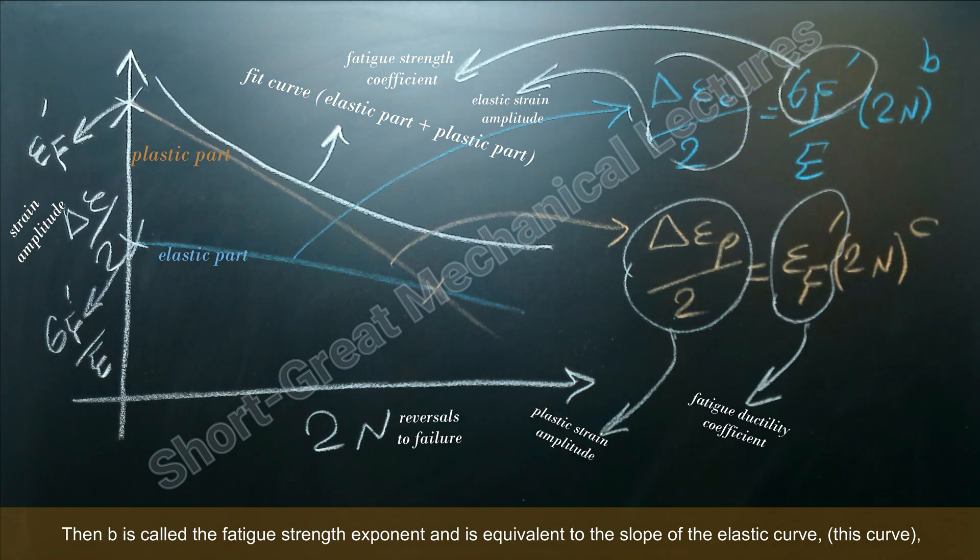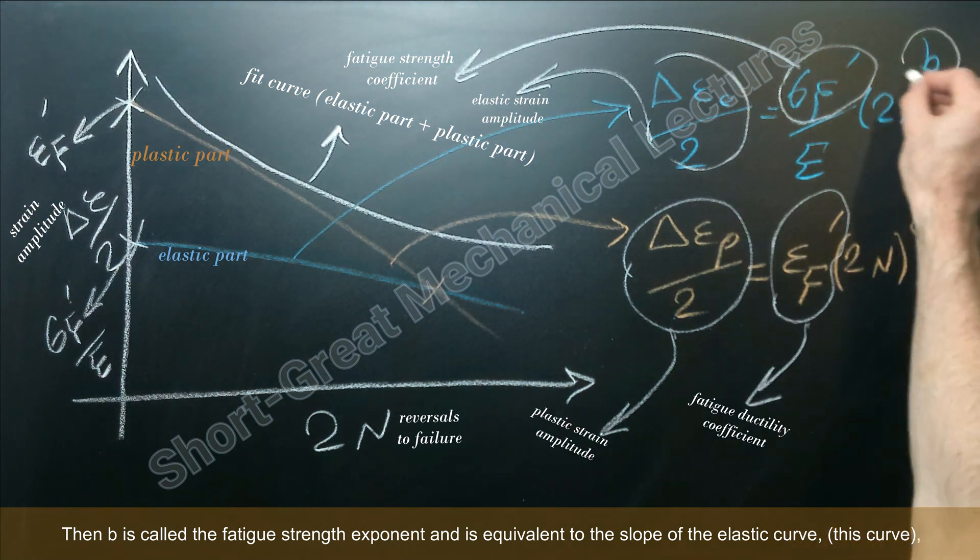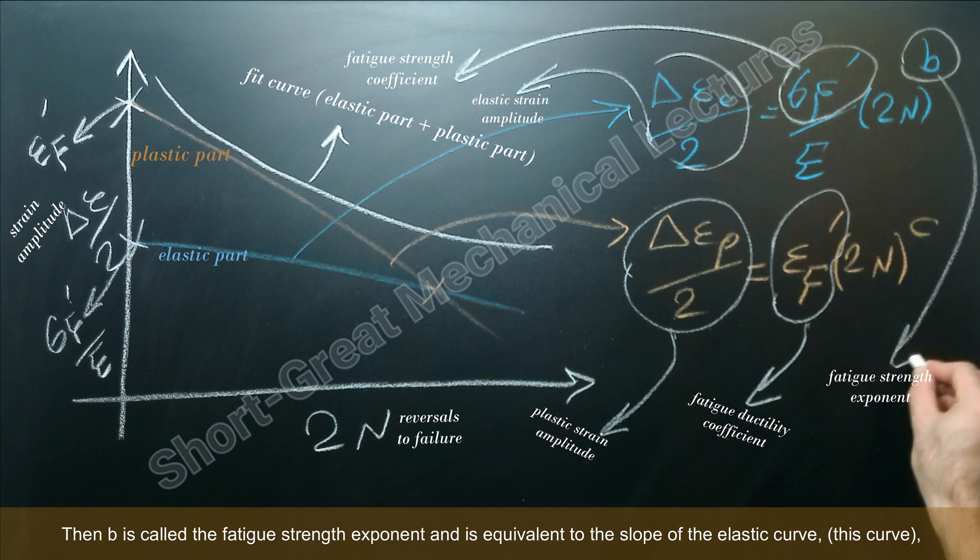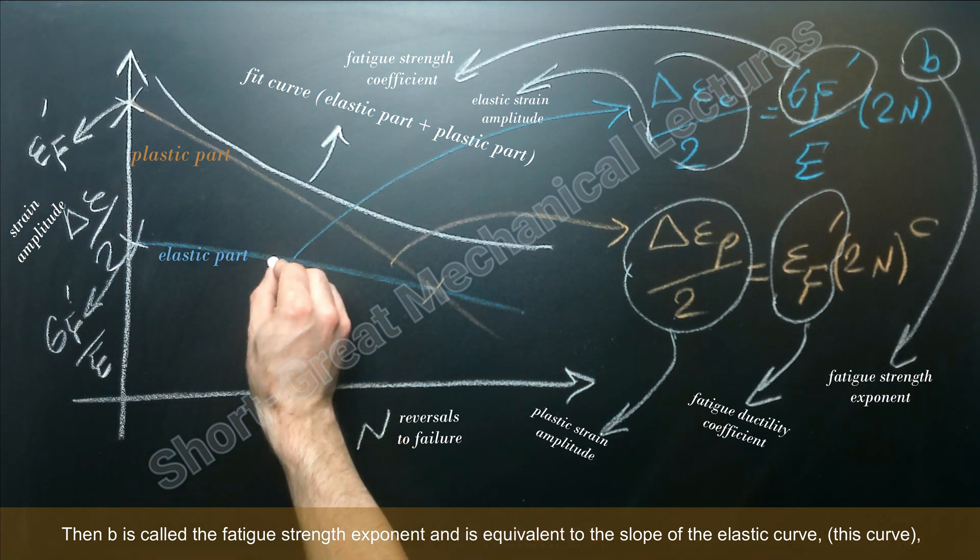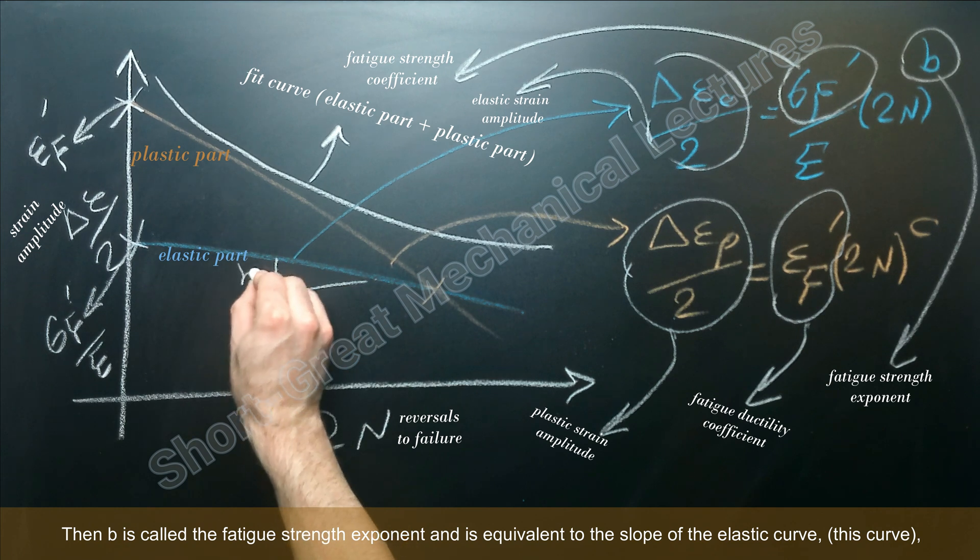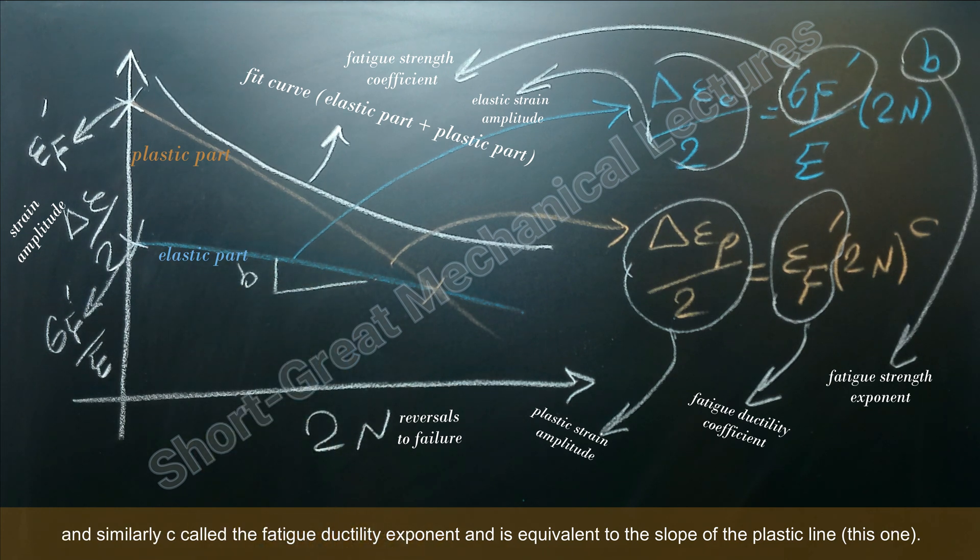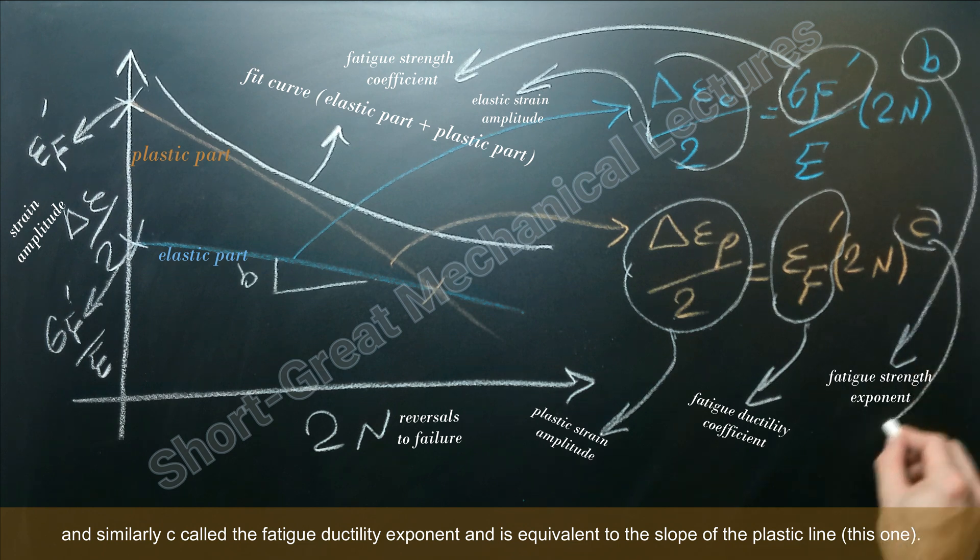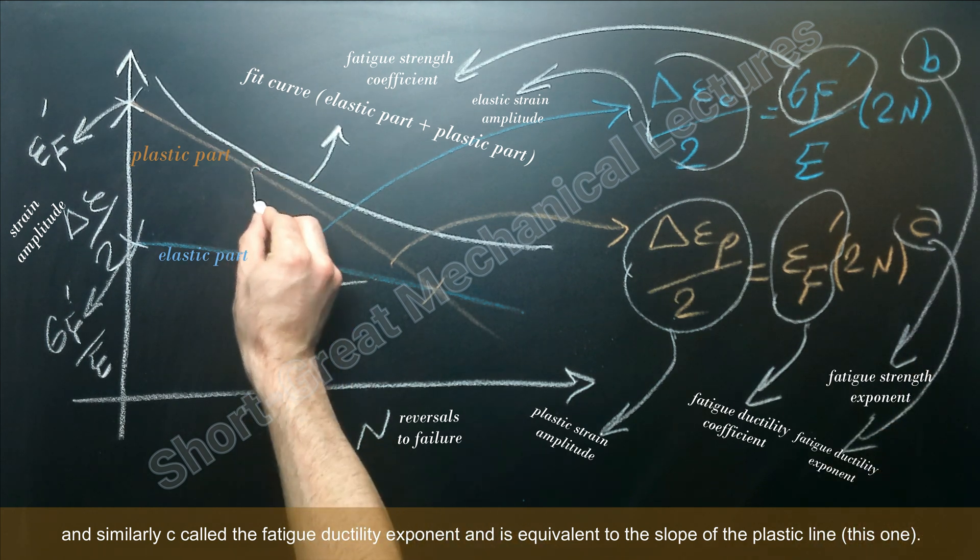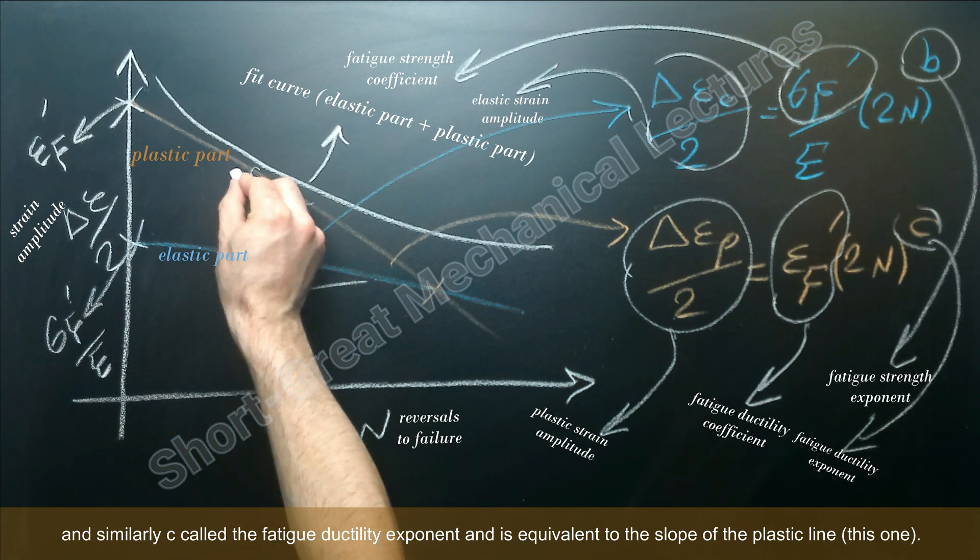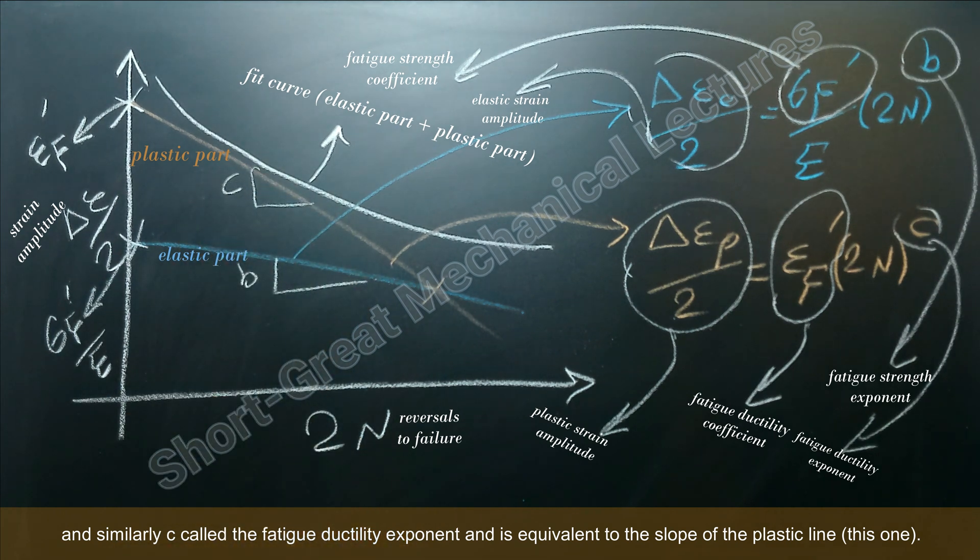Then B is called the fatigue strength exponent and is equivalent to the slope of the elastic curve, this curve. And similarly C, called the fatigue ductility exponent, is equivalent to the slope of the plastic line, this one.